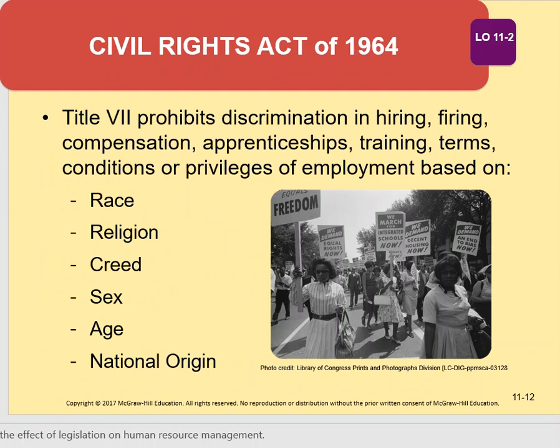Probably the most important law with regards to human resource management occurred 50 years ago — the Civil Rights Act of 1964. Specifically, Title VII of the 1964 Civil Rights Act prohibits discrimination in hiring, firing, compensation, and other things based on certain criteria including race, religion, creed, sex, age, and national origin. Title VII only applies to companies with 15 or more employees.